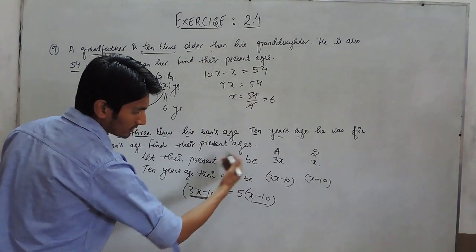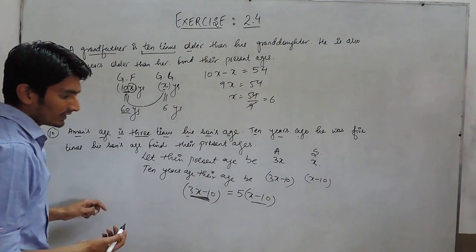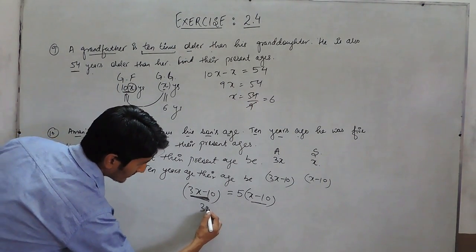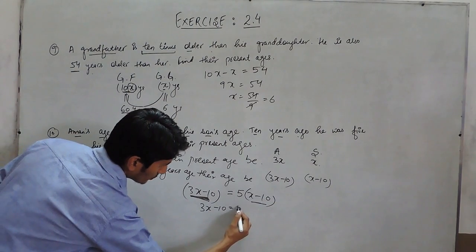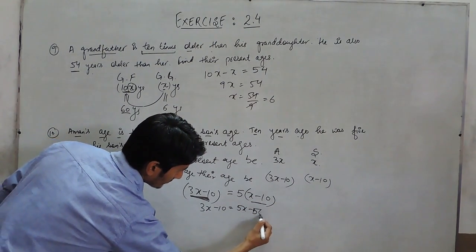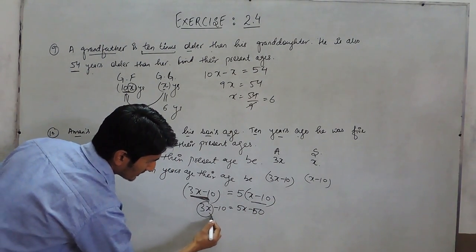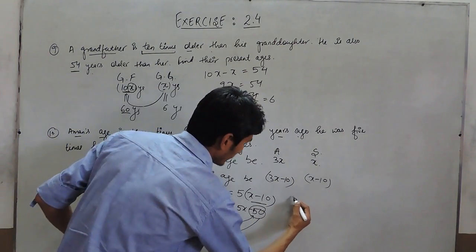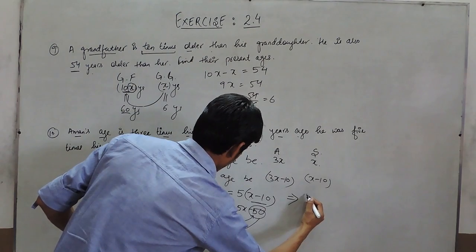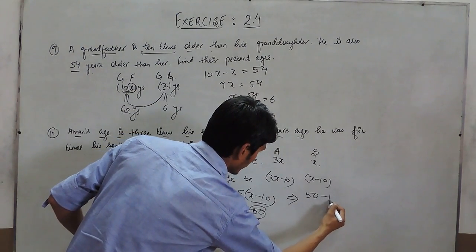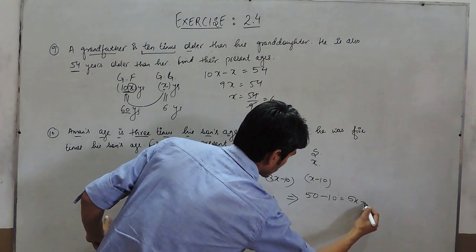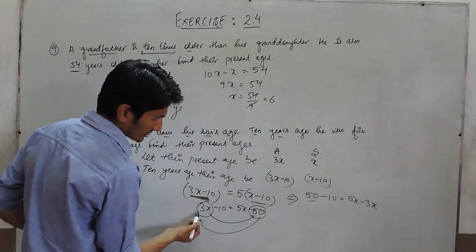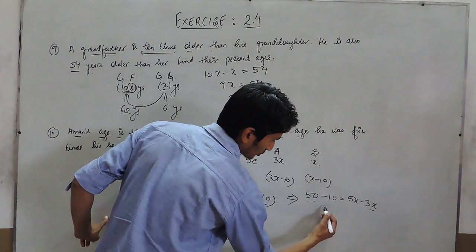Means we have to make son's age 5 times so that it must be equal to the age of the father. So, solving this equals to 50, shifting this variable to this side and this constant to this side, it will give 50 minus 10 and 5x minus 3x. Because this negative will give positive 50 and this positive will give negative 3x.